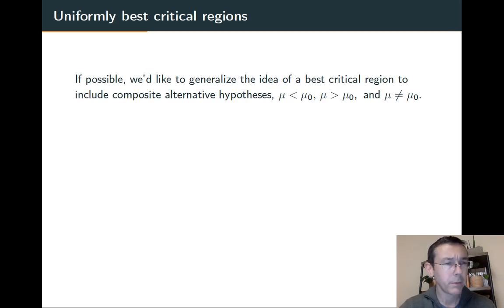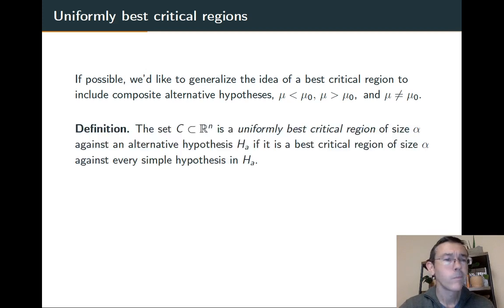So can we still talk about best critical regions in that case? The answer is yes, we'll call it a uniformly best critical region in the situation where we have one, and it's defined to just be a set that is a best critical region for every parameter value that's included in the alternative hypothesis. So for example, if we have the alternative hypothesis μ < μ₀, then the region C would have to be a best critical region for every single value less than μ₀, every single value of μ.